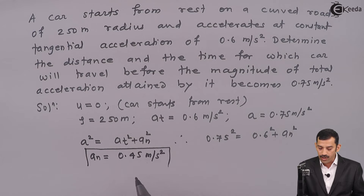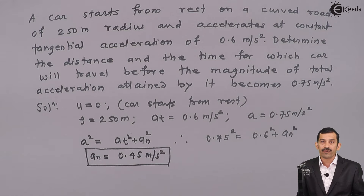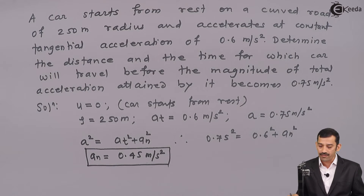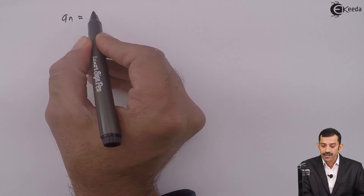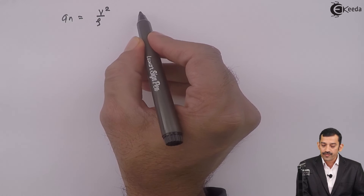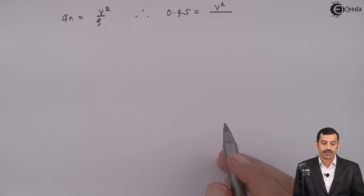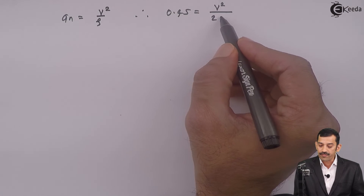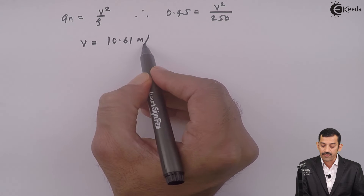The normal component of acceleration AN is always directed towards the center of curvature of the path, and its magnitude is given by AN = V squared upon rho. Since we know AN is 0.45 and the radius of curvature rho is 250 meters, we can easily find the velocity. Using the calculator: 0.45 = V squared divided by 250, which gives a velocity of 10.61 meters per second.